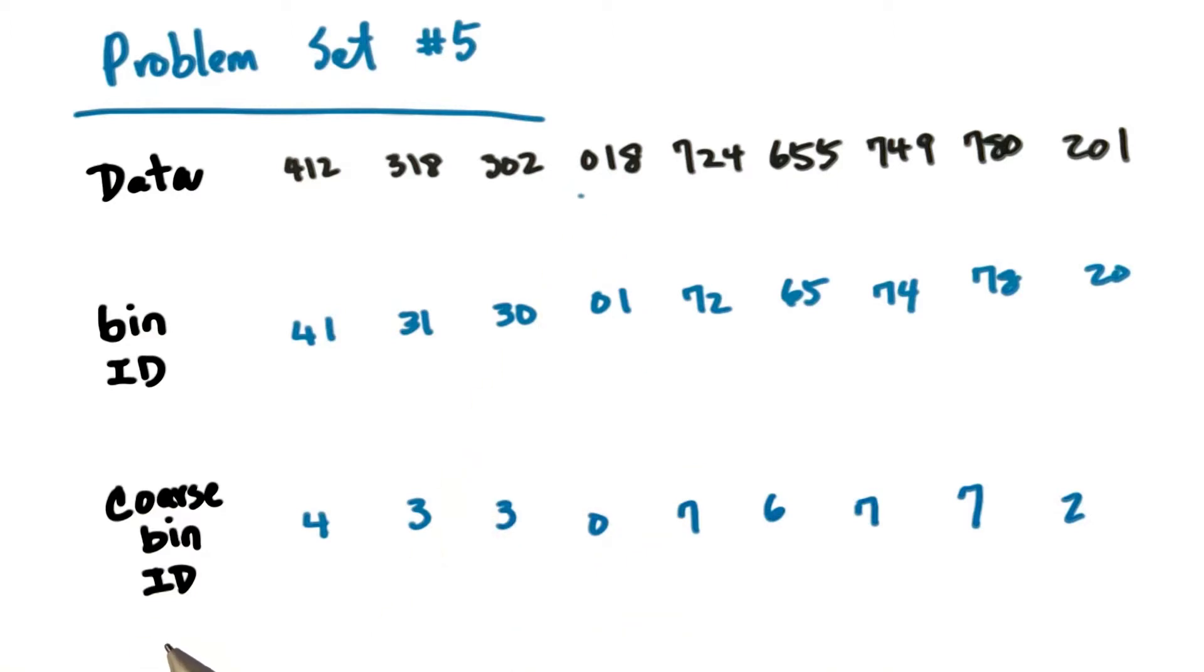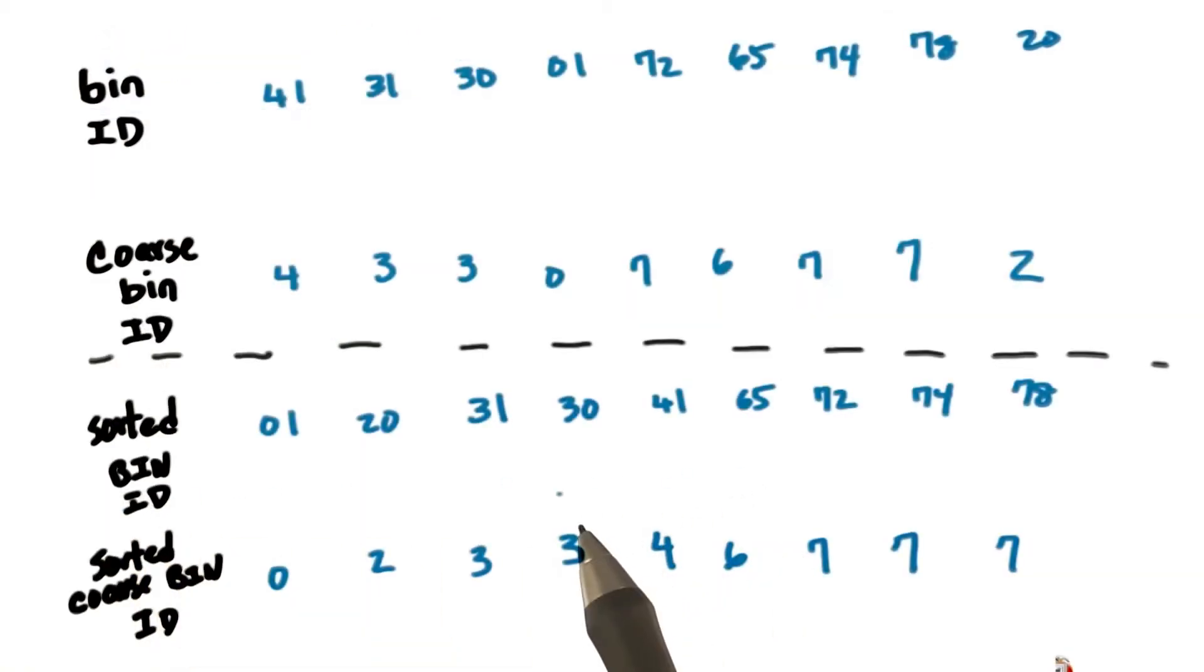Now let's sort the final bin ID by the coarse bin ID. This is the final result after we sort the bin ID by its coarse bin ID.